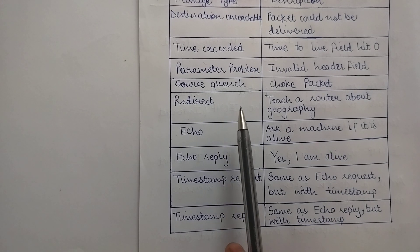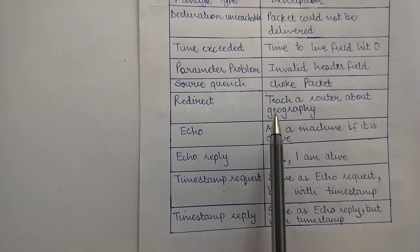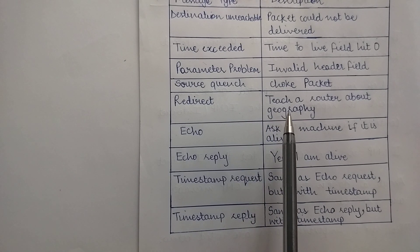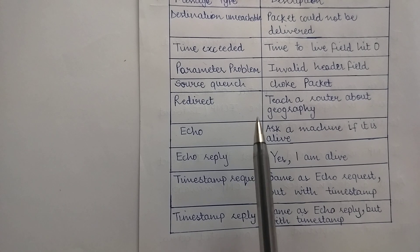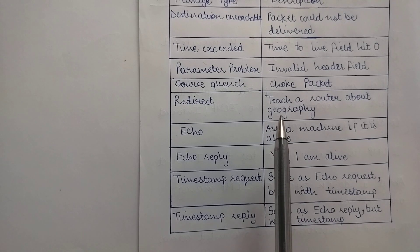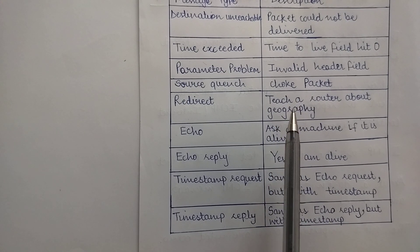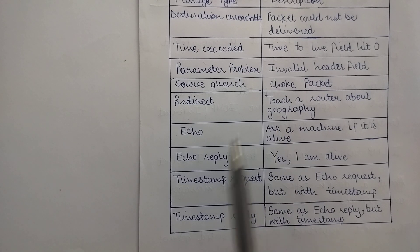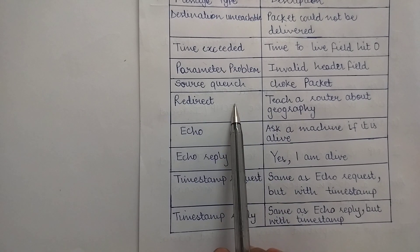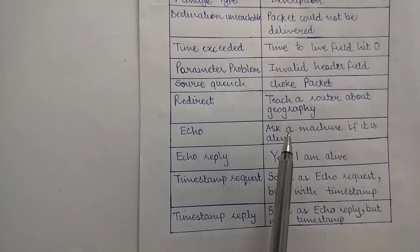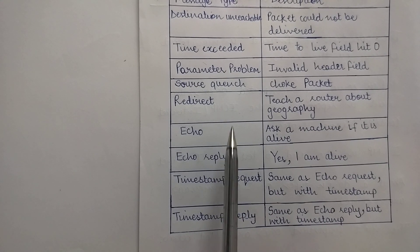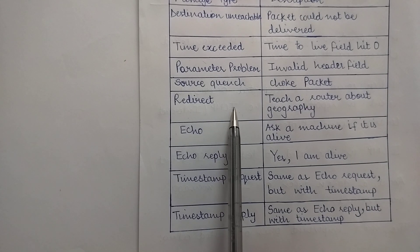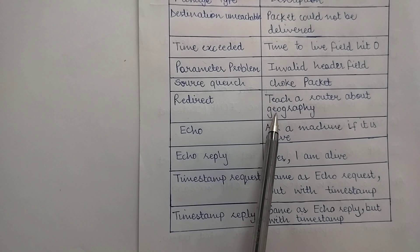The next message is 'Redirect.' This message is used when a router notices that a packet seems to be routed incorrectly. A router may have chosen a specific path for a packet that was not the optimal or correct path. When such an error is detected, the redirect message is used by the router to inform the sending host about the problem, so the correct path can be used.